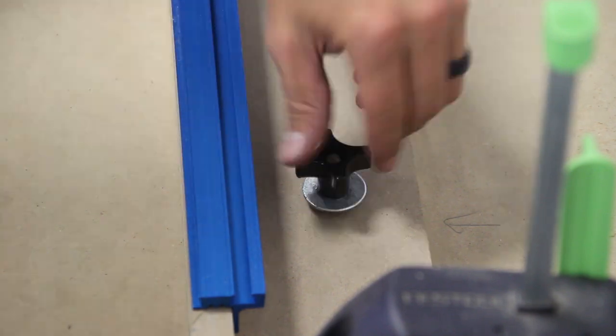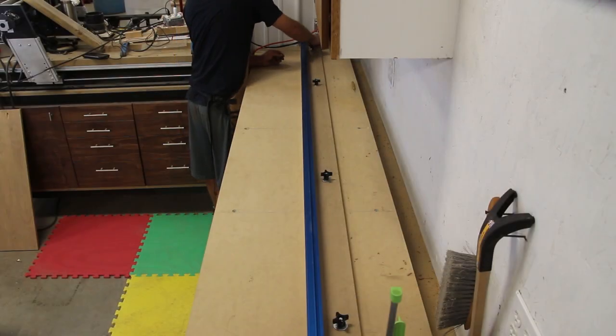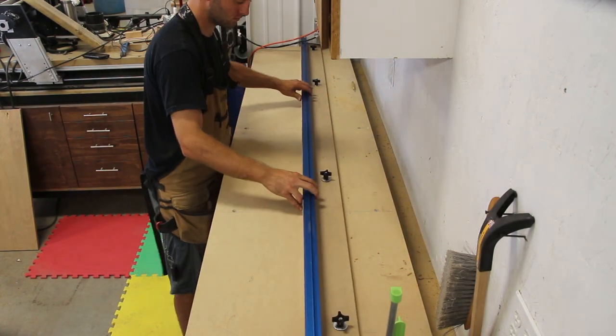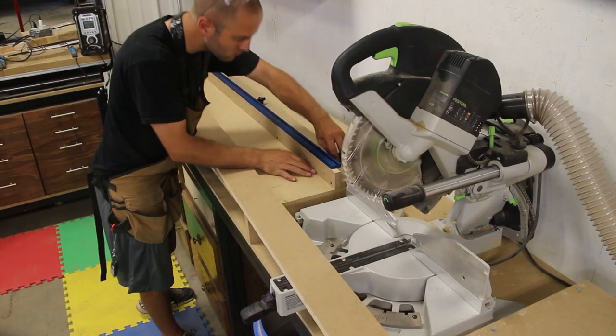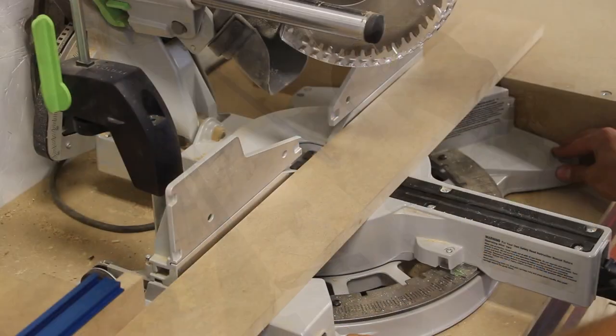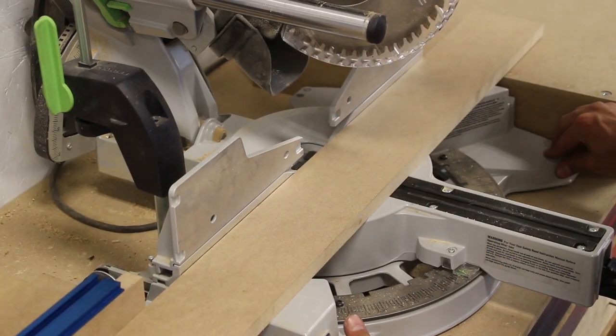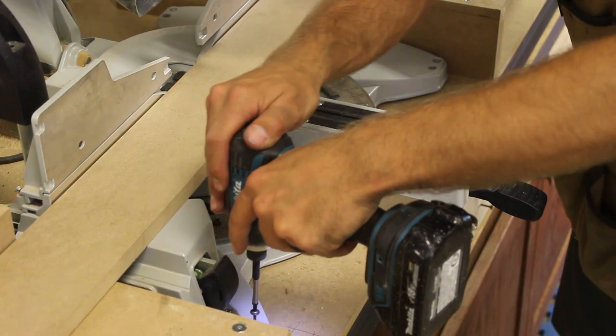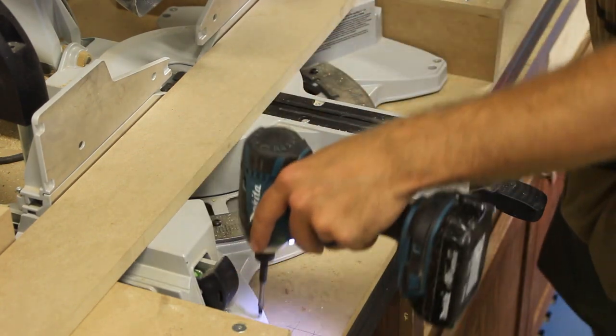I use four star knob assemblies to secure the longer eight foot section. As you can see here the oversized hole allows for adjusting the fence to the saw. I place a long straight section of MDF to align the fence to the saw and then screw down the miter saw. I then use the star knobs to fine tune the alignment.